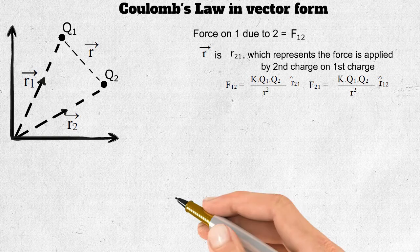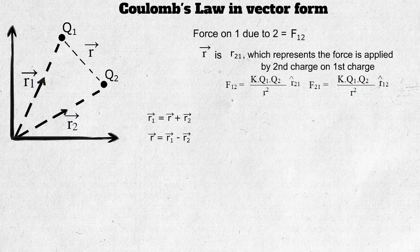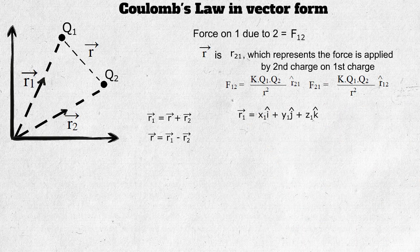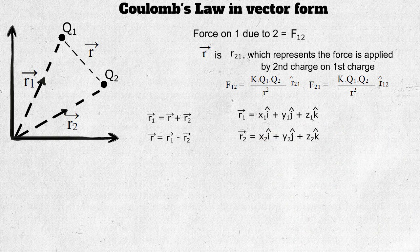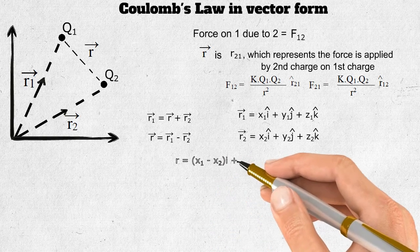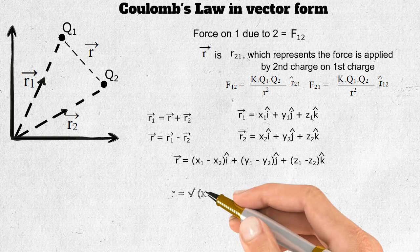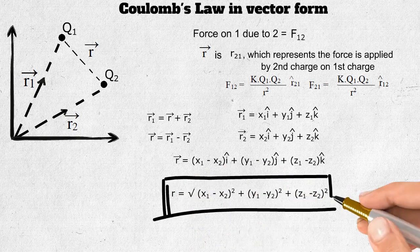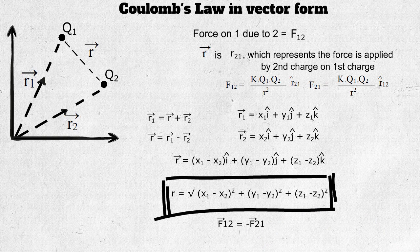According to vector algebra, r₁ = r + r₂, so r = r₁ − r₂. In component form: r₁ = x₁ î + y₁ ĵ + z₁ k̂, and r₂ = x₂ î + y₂ ĵ + z₂ k̂. Therefore r = (x₁−x₂) î + (y₁−y₂) ĵ + (z₁−z₂) k̂, and the magnitude |r| = √[(x₁−x₂)² + (y₁−y₂)² + (z₁−z₂)²]. F₁₂ = −F₂₁, meaning they are equal in magnitude and opposite in direction.